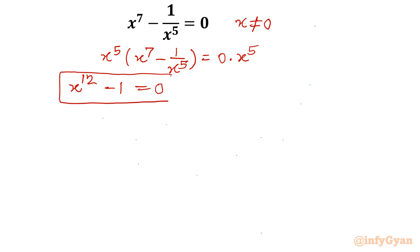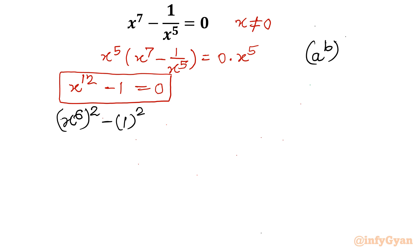We are supposed to find the roots for this equation. I will solve using algebra. I am going to write x power 12 as x power 6 whole square, and write 1 as 1 square, using the exponent property that a power b whole power c equals a power b times c — so 6 times 2 is 12.